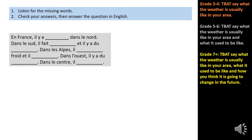Let's see if you got those right. Number one: en France, il y a des orages. Number two: dans le sud, il fait chaud. Number three: il y a du soleil. Number four: il fait froid. Number five: il neige. Number six: il y a du brouillard. And number seven: il pleut.